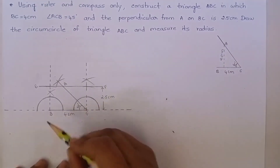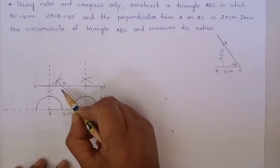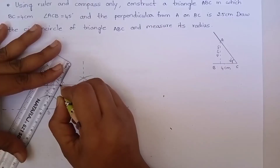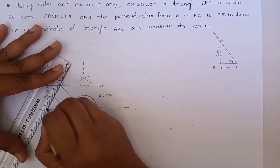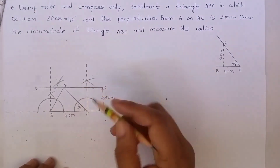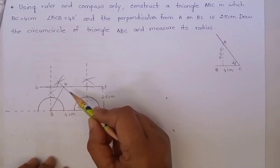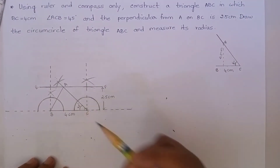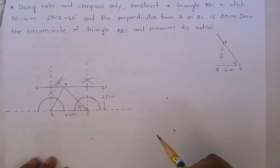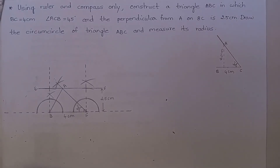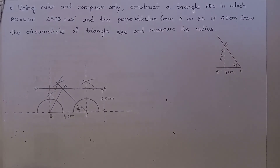Now join AB. Now ABC is the required triangle. Did you understand up to here?